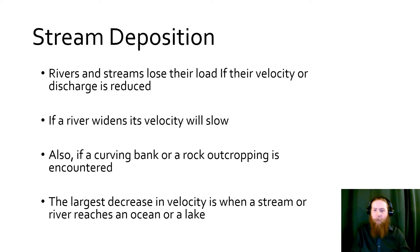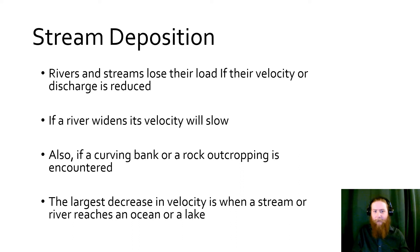When we lose velocity or reduce the amount of discharge, deposition occurs. This happens as a river widens and loses velocity, if it comes into a curve where it has to change direction, or hits a rock outcropping and has to go around it — these all slow it down. But the largest decrease happens when we reach an ocean or a lake: the banks become really wide compared to what they were, and we drop all of the sediment.